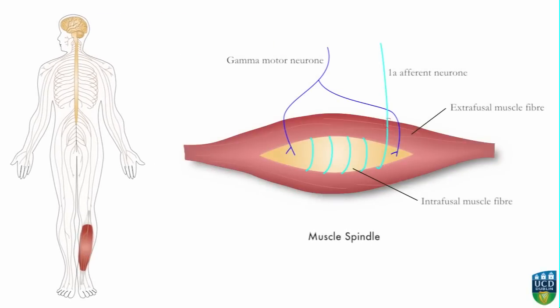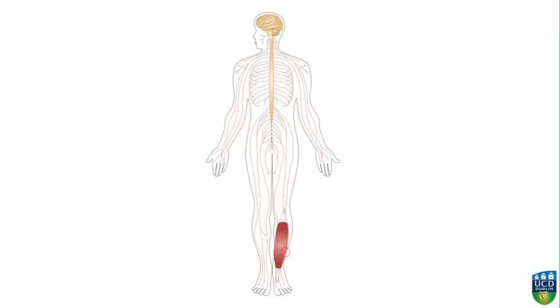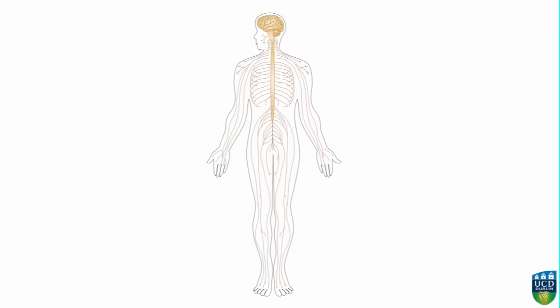Changes in muscle length, and therefore the position of the body part being moved by that muscle, are detected by stretch receptors in intrafusal muscle fibers. The impulse arising from stimulation of muscle spindles travels via the first order neuron from the soleus muscle through nerves in the leg to reach the spinal cord via the lumbosacral plexus.